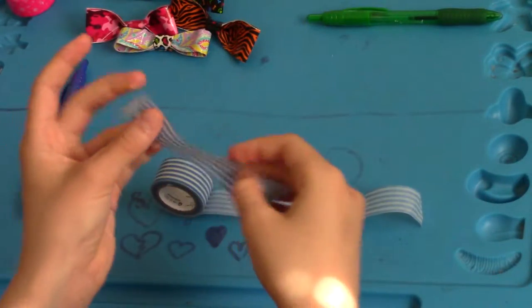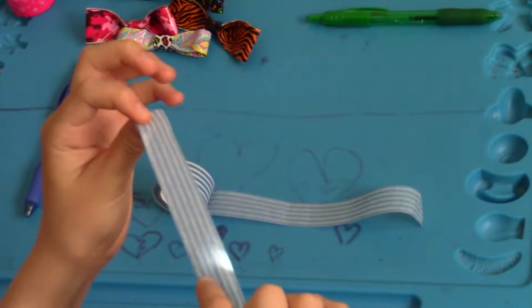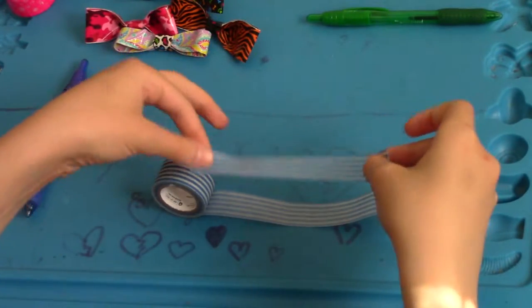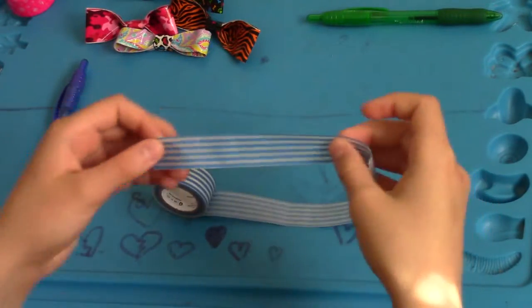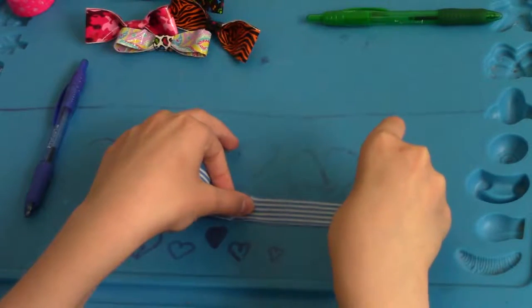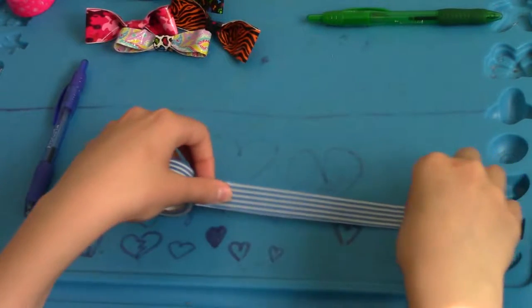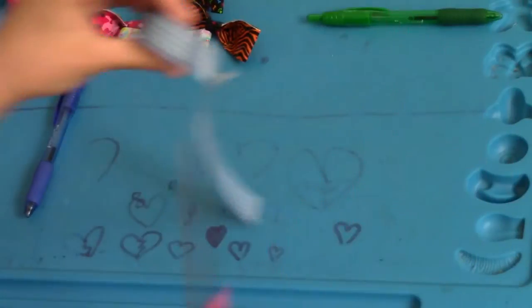So, keep that still, and then put the sticky part, which is right here. And then just kind of put it down, just like that. Then cut it off with a roll.